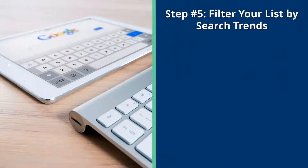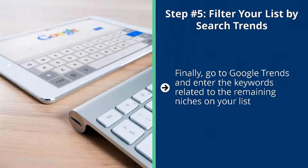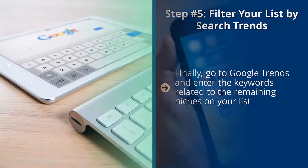Step number five: filter your list by search trends. Go to Google Trends and enter the keywords related to the remaining niches on your list. Look for a trend line that is going up, or at least flat with a slight tilt upward. This tells you that your niche is not dying over time — very important, because you don't want to build your business on a niche that's on its way out.